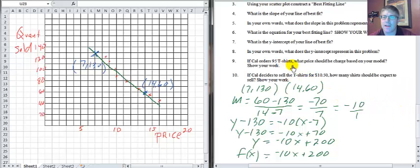If Cal orders 95 shirts, what price should he charge? That means he's going to try and sell all 95. So in this case, we're giving you the y or the f of x and we want to solve for x. We would say 95 equals negative 10x plus 200, and solve for x.